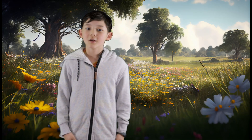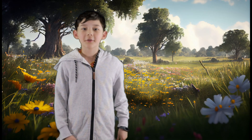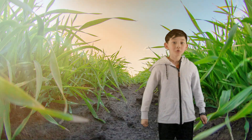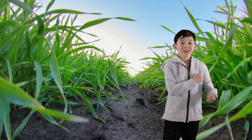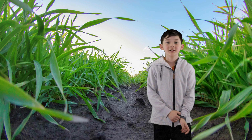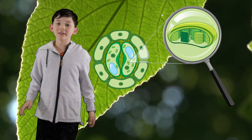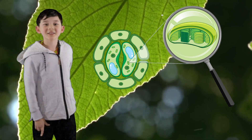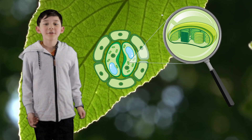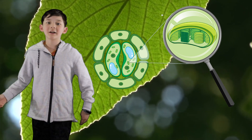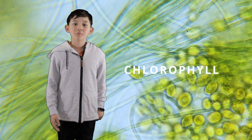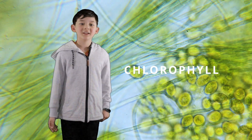To understand photosynthesis, we need to know the key players involved. Sunlight — the sun is the ultimate source of energy for nearly all life on Earth, and plants are no exception. Chloroplasts — inside plant cells, there are tiny structures called chloroplasts, which are like the kitchens where photosynthesis takes place. Chloroplasts contain a green pigment called chlorophyll that gives plants their characteristic colour.